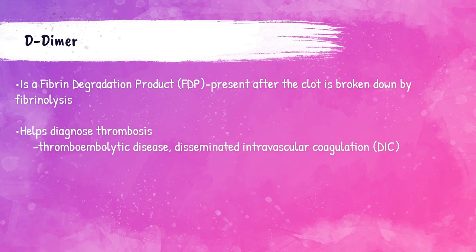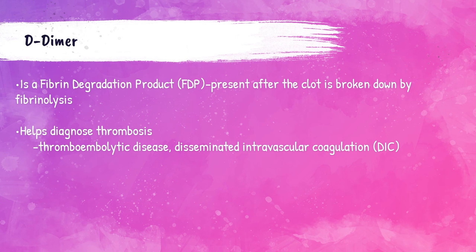Remember when the fibrin mesh is degraded after the endothelial lining is repaired? Tissue plasminogen activator binds with plasminogen, activating plasmin to degrade the fibrin mesh over the platelet plug. This degradation releases D-dimer and fibrinogen, both of which we can test for. D-dimer is a fibrin degradation product and is used to help diagnose thrombosis. This can occur in thromboembolytic disease, where blood clots form in the deep veins, and in disseminated intravascular coagulation (DIC), a serious condition where the body clots in various places and exhausts all coagulation factors, leading to massive bleeding — both conditions are very deadly.